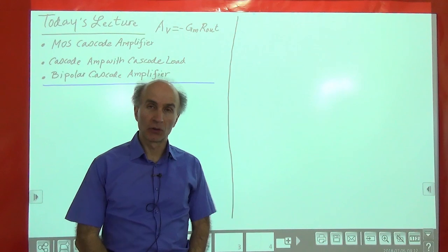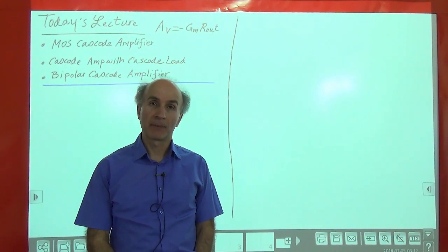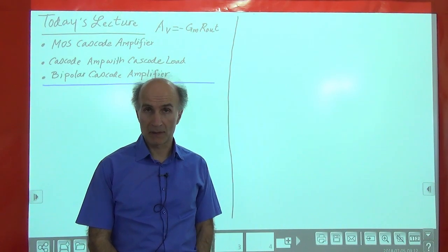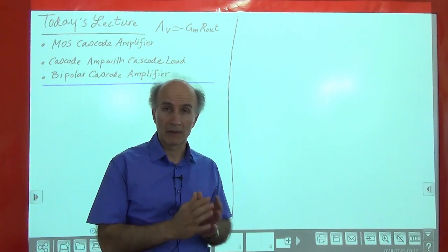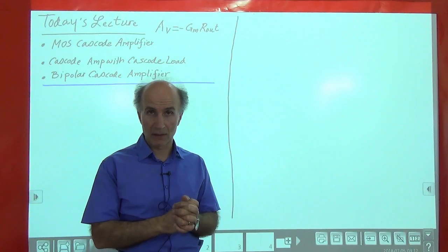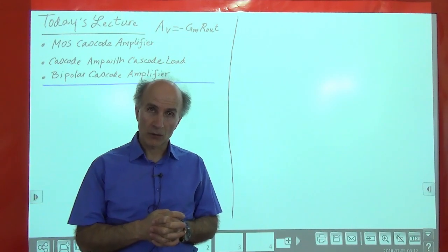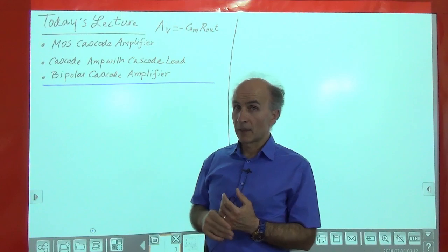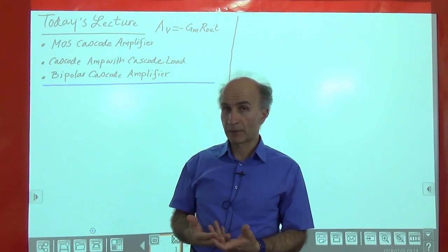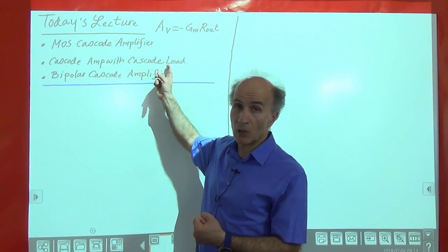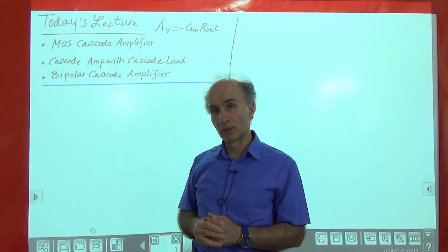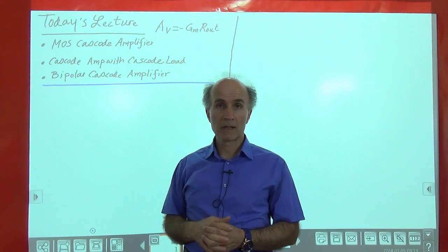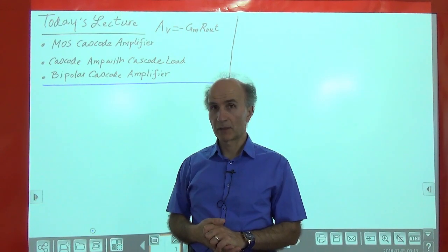Welcome to Electronics 2, lecture number 3. I am Benzar Razavi. Today we will look at the cascode structure as an amplifying device and see that it has some nice properties that we have not been able to find in Electronics 1 or in earlier electronics courses. We'll start with the MOS cascode amplifier, then see how to maximize its benefit using a cascode load, and then extend these ideas to the bipolar version.